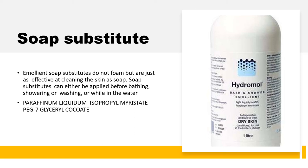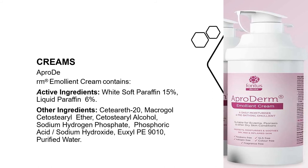In terms of applications, emollients can be used as soap substitutes. Emollient soap substitutes do not foam but are just as effective at cleaning as soap, and can be applied before bathing, showering, or washing, or while in the water. Examples include paraffinum liquidum, isopropyl myristate, and PEGs with glyceryl cocoate. They are also widely used in moisturizing creams and vanishing creams. One example is a cream containing white soft paraffin as the active ingredient along with liquid paraffin.